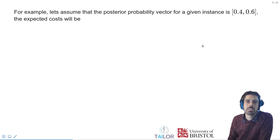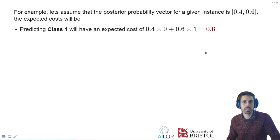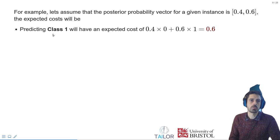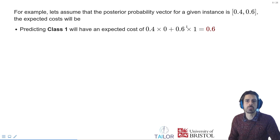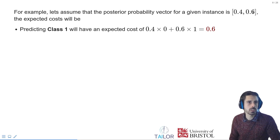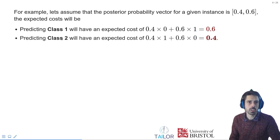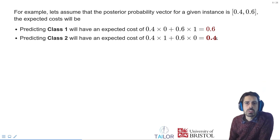Let's assume we are given an instance and our model outputs probabilities 0.4 and 0.6. With the previous cost matrix, to calculate the expected cost of predicting class 1, we multiply the posterior probability of class 1, which is 0.4, by the cost of predicting class 1 if the true class is 1, and add the probability of class 2 times the cost given the true class is class 2. We can do the same for class 2, where the order changes.